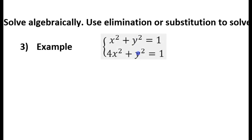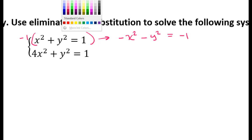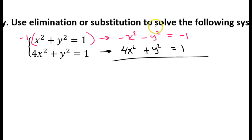Elimination is a method where you want opposites to cancel each other out. I have y-squared and y-squared in both equations, so all I need to do is multiply the top equation by negative 1. That creates opposites that will cancel. So multiplying by negative 1 gives me negative x-squared minus y-squared equals negative 1, and the bottom equation stays as 4x-squared plus y-squared equals 1.